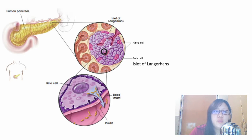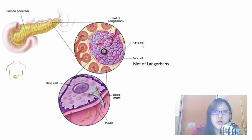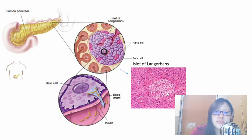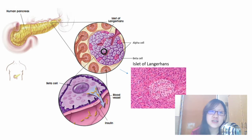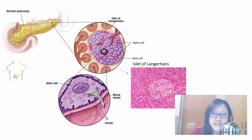Zooming in further, the islet of Langerhans connects to a blood capillary. It is a group of alpha and beta cells — alpha cells secrete glucagon, beta cells secrete insulin. Under a microscope, if given a transverse section of the pancreas, you can identify the slightly circular islets of Langerhans. Beta cells directly secrete hormones into the blood vessel — this is the hallmark of an endocrine gland: secreting hormones directly into the bloodstream.